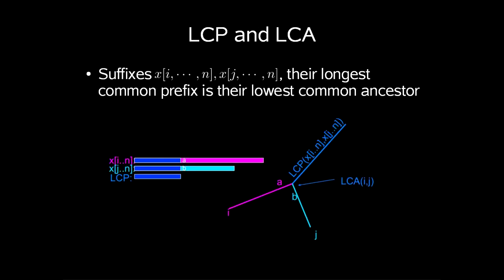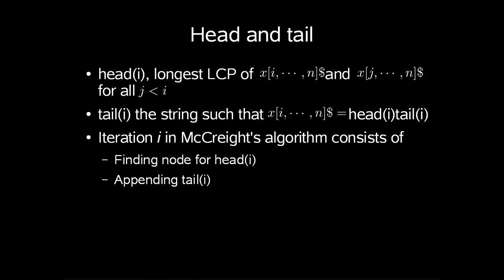For suffixes of x, x[i...n] and x[j...n], their longest common prefix is their lowest common ancestor in the suffix tree. In McCreight's algorithm, we also have the mention of head and tail.